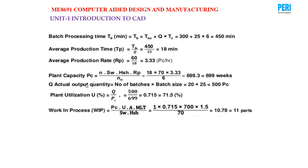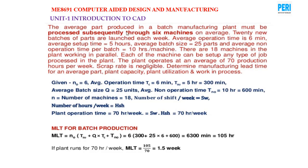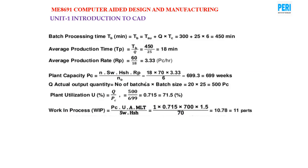Actual output Q equals number of batches × batch size equals 20 × 25 equals 500 pieces. Plant utilization U equals Q / PC equals 500 / 699 equals 0.715, i.e., 71.5%. Work in progress: WIP equals PC · U · A · MLT / (SW · SH). With PC per machine, U equals 0.715, A assumed, and MLT equals 1.5 weeks, solving gives approximately 10.78, rounded to 11 parts.